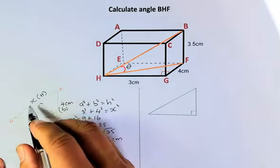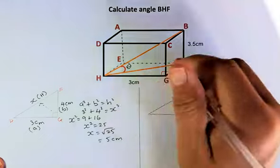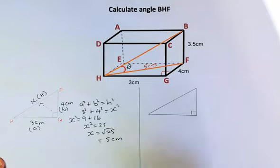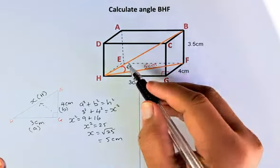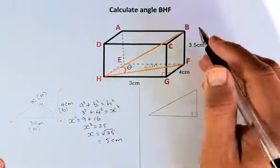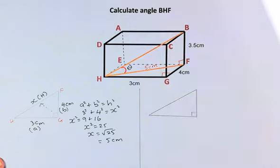So the length HF is 5. So we're going to put them in our diagram there. So HF is now going to be 5cm. So now, if we know HF is 5, we can easily find theta. Because the angle BFH is also 90 degrees.